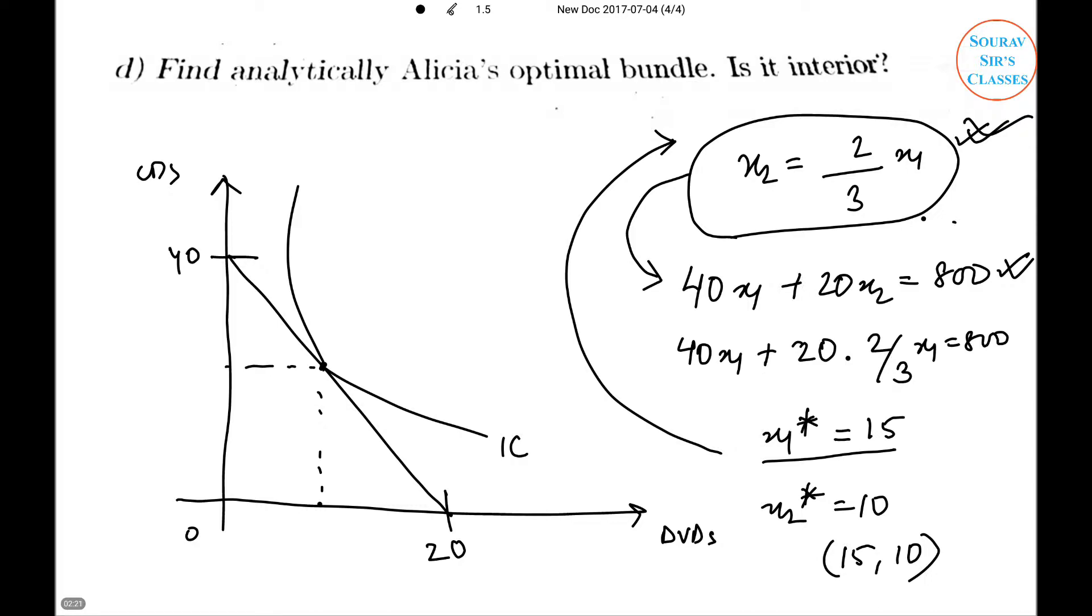Now 15 and 10 will be lying somewhere here. This is 10, this is 15. As the consumer is consuming non-zero amounts of both goods, the point is said to be interior.